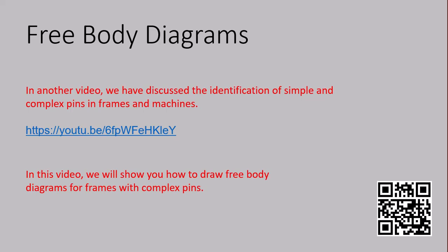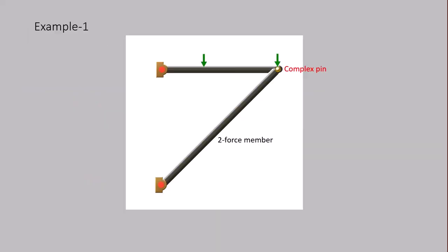In this video, we are not going to draw any free body diagram for the whole frame. Let's look at example one. In this example, we have a two-force member and a multi-force member and one complex pin. This pin is complex because we have three interactions: two members and an applied force. So we are going to draw three free body diagrams.